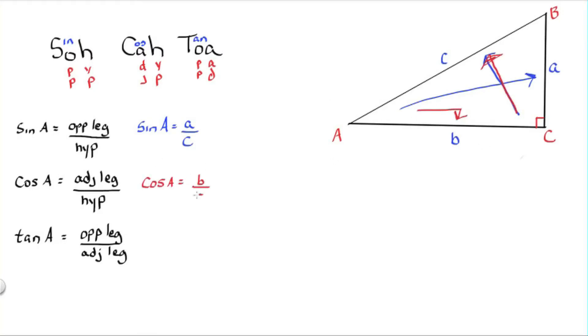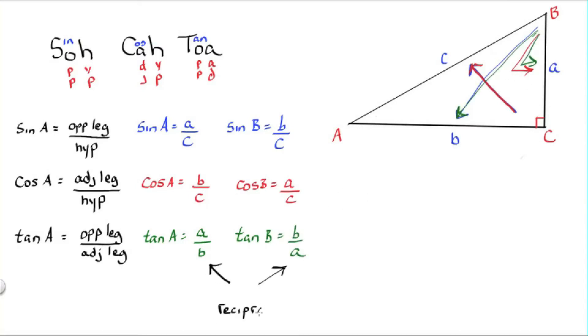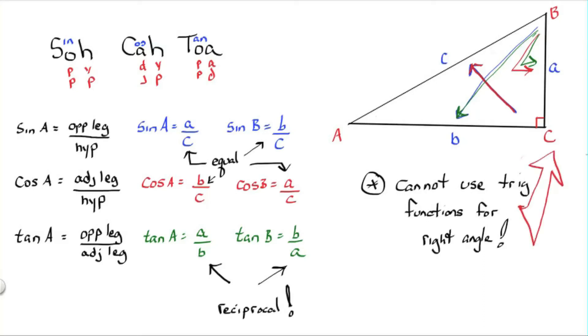Here we have right triangle ABC. And I'm showing the equations that will work for angle A, as well as angle B. Notice that the tangent of A and the tangent of B are reciprocals of each other. And cosine of angle A and sine of angle B are equal, as well as the sine of angle A and cosine of angle B. We cannot use the trig functions for the 90 degree angle.